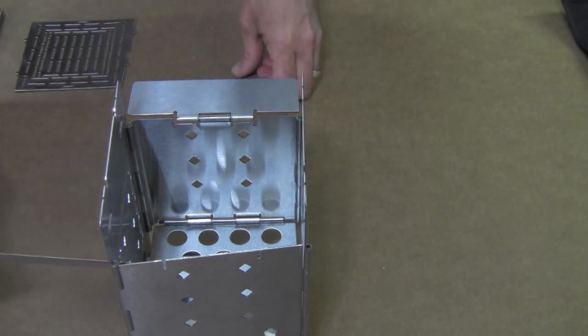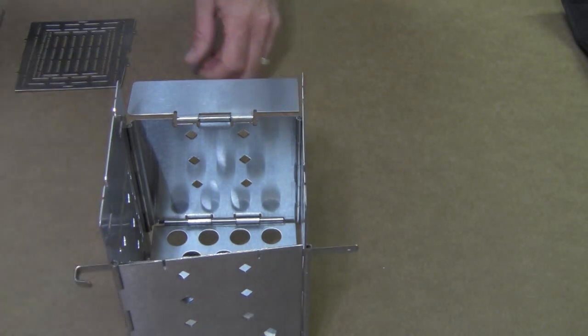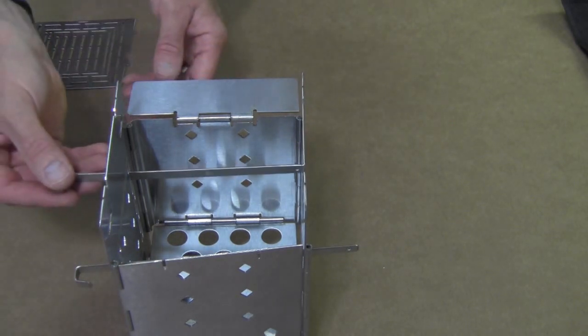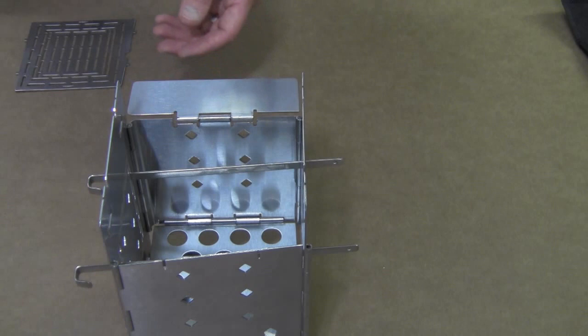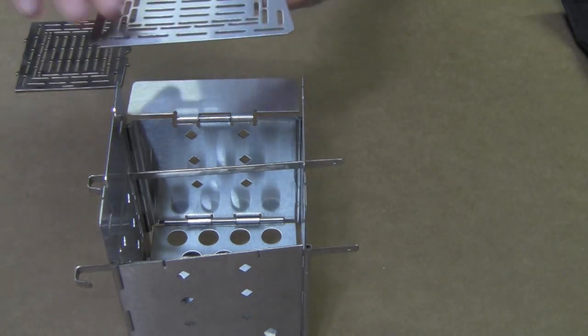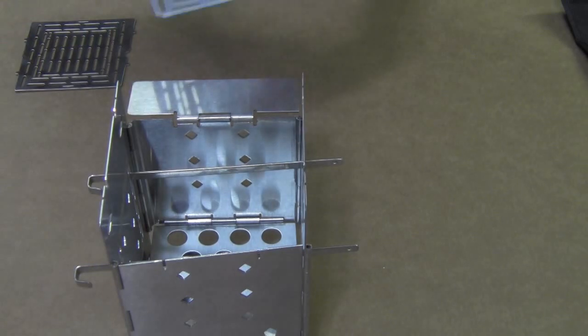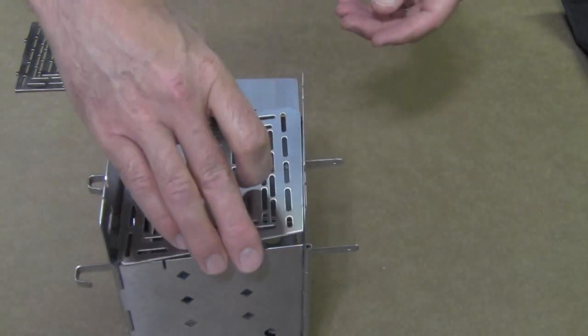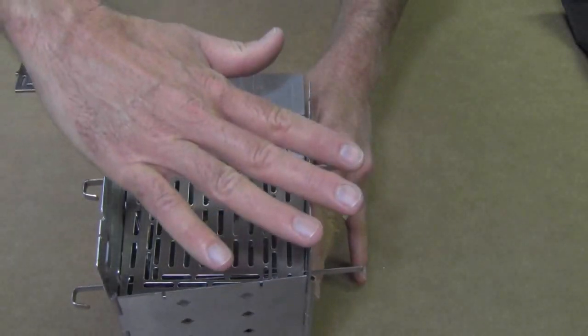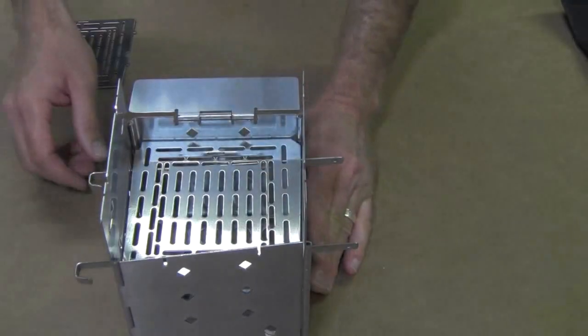Another accessory we have is called the adjustable fire grate which allows you to raise up the height of your fire. It also makes it so you can use wood pellets or charcoal briquettes at a higher level, a little closer to your pot so you can use much less wood pellets.